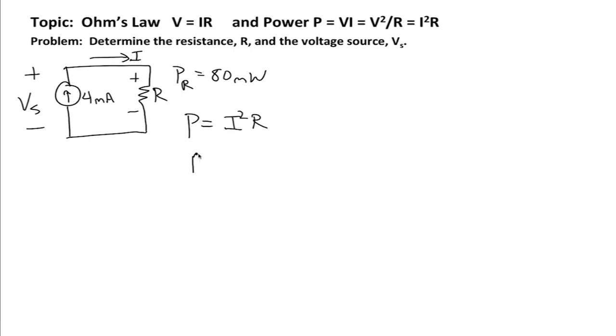So the resistance is going to be equal to P divided by I squared. P is 80 milliwatts, it's positive. I is equal to 4 milliamps. We're going to square that. And ultimately we end up with a resistance that's equal to 5 kilo-ohms.